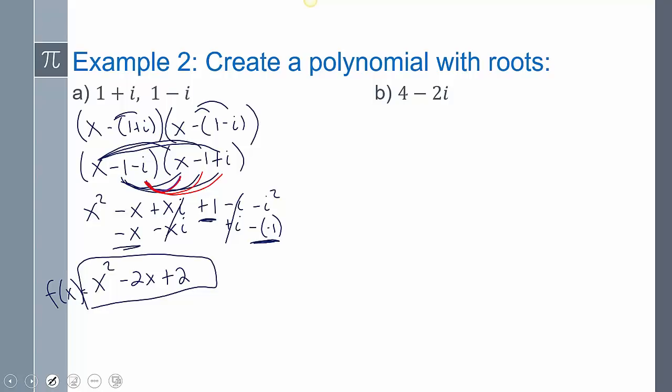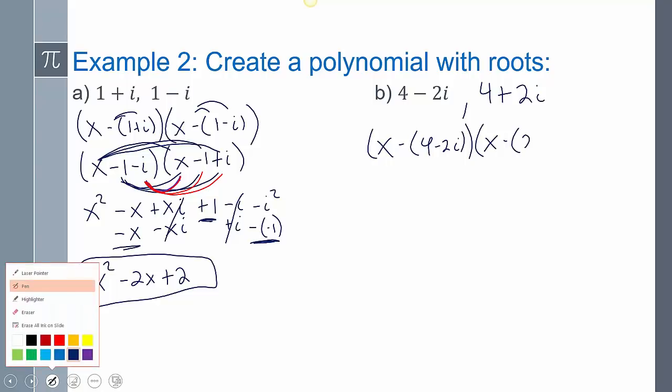Now for this next one, example number 2, I only have one complex root here, I only have this one imaginary root, a + bi. So I have to assume that for 4 - 2i, its conjugate also exists. So now we write it out. x minus your zero, x minus your zero.